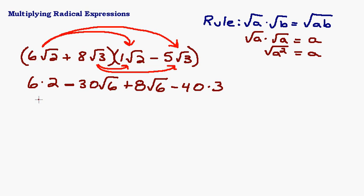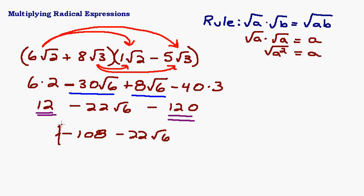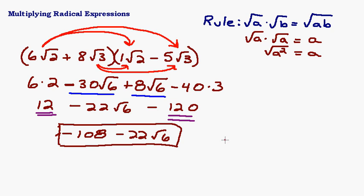Now let's simplify. 6 times 2 is 12. Combining the like √6 terms: −30√6 + 8√6 = −22√6. And −40 times 3 = −120. Combining the rational terms: 12 − 120 = −108. The √6 cannot be simplified further, so the final answer is −108 − 22√6. Hopefully that's a good introduction to multiplying radical expressions — use your FOIL skills and previous knowledge of working with radicals.